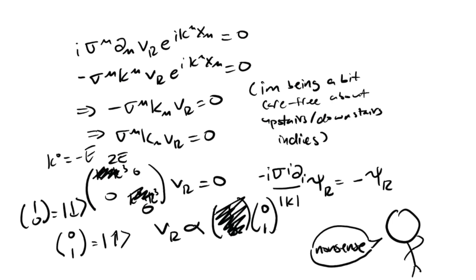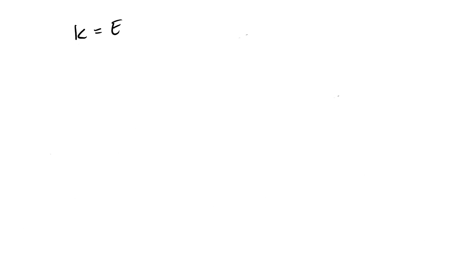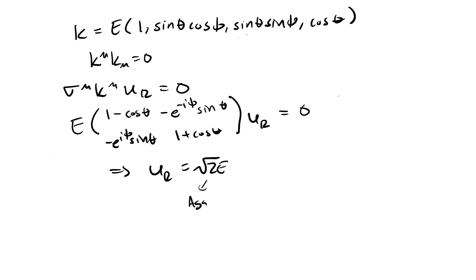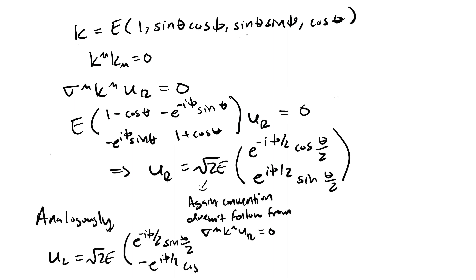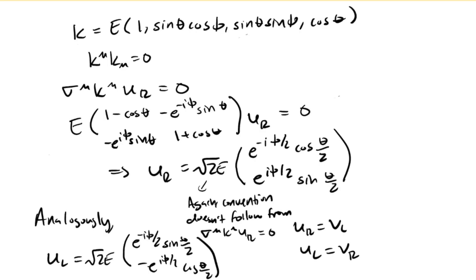But what if a particle is traveling in some general momentum direction? We can write the momentum 4-vector like this, which leads to these equations for left and right chiral spinors in some general momentum direction. These equations are going to be useful when calculating QED scattering amplitudes, where angles become relevant.